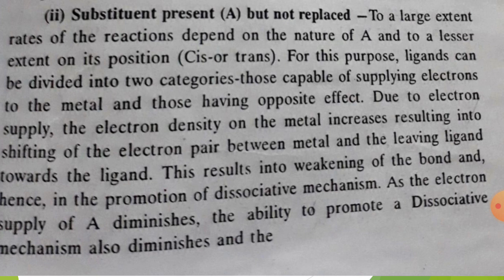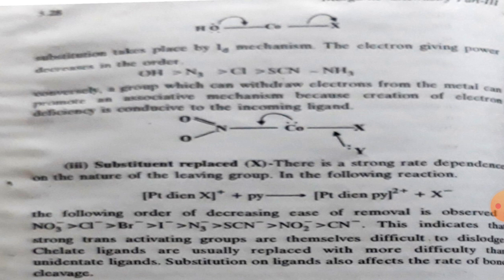As the electron supply of A diminishes, the ability to promote a dissociative mechanism also diminishes. Conversely, a group which can withdraw electrons from the metal ion can promote an associative mechanism, because the creation of electron deficiency is conducive to the incoming ligand.